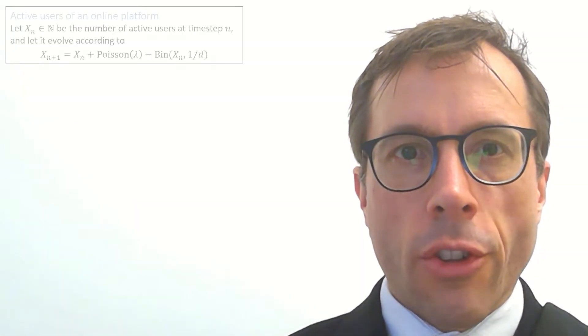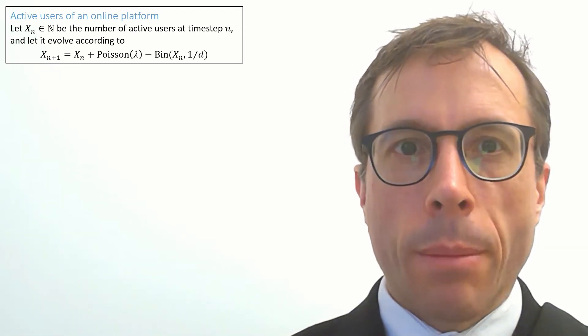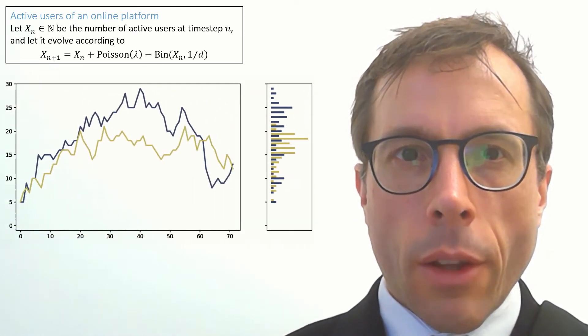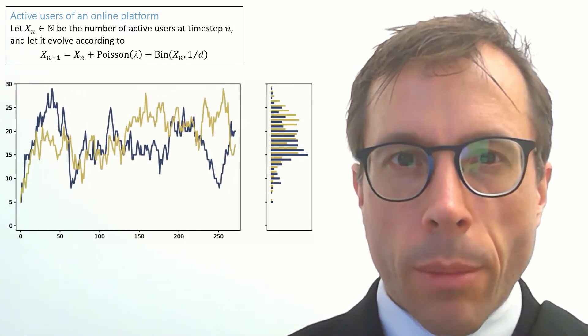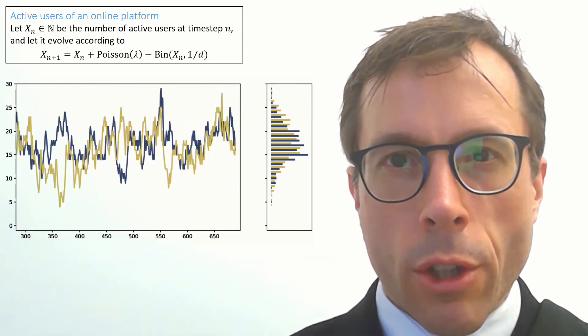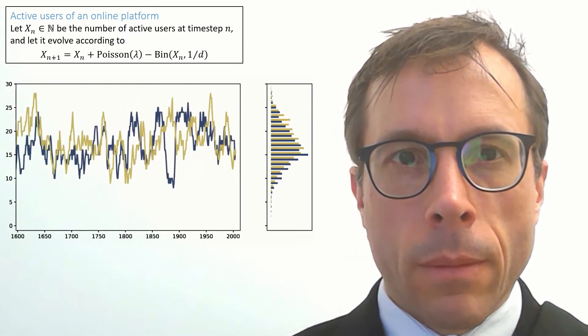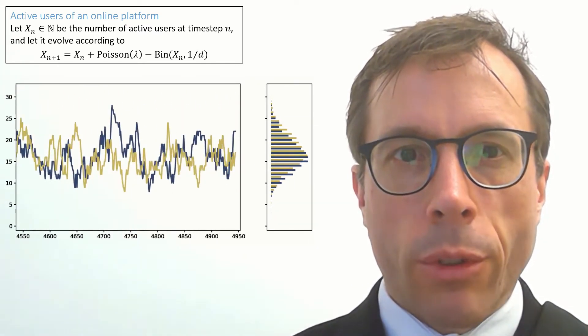In an earlier video, we looked at an active users model meant to model the number of users currently using an online platform. This is the sort of behavior we saw: the number of users keeps fluctuating randomly—of course it's a random process—but it settles down to a stable distribution shown here on the right. In this video, we're going to see how to calculate this stable distribution.